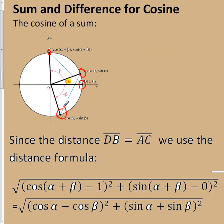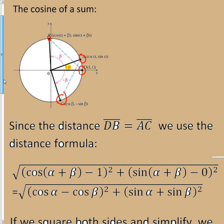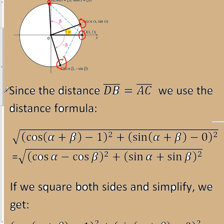So I have the distance formula, and I'm going to use my points. I'm going from D to B equals A to C. So if we look from D to B, you're going to have cosine of alpha plus beta minus 1 squared.